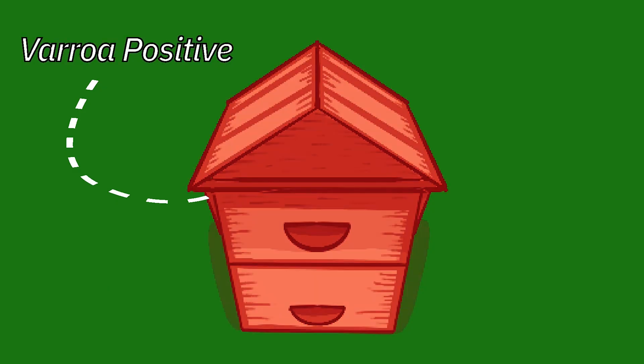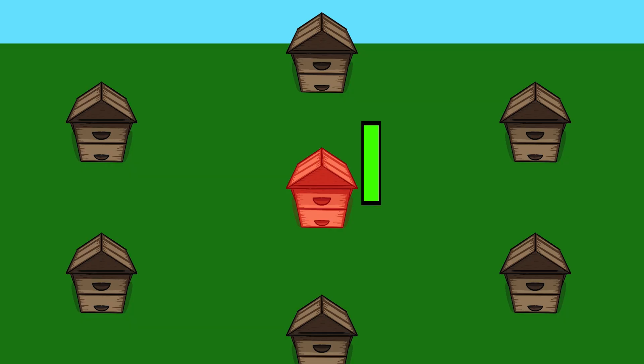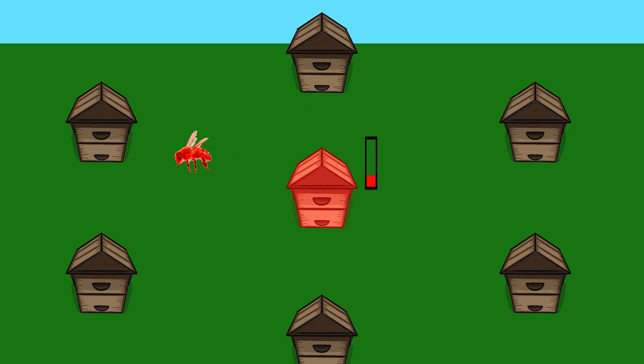Varroa destructor, once it moves into an area, quickly becomes the problem that honey bee colonies face. Varroa is really bad and its life cycle is key to that. But before speaking about its life cycle, I want to talk about how it spreads once it moves into an area. Imagine you have a colony that is varroa-positive in your apiary, and your other colonies don't have it. Varroa can spread from that one colony to neighboring colonies because as varroa weakens it, neighboring colonies may come to rob it. When they come to rob the resources, the varroa get on workers from those neighboring colonies and hitchhike back to those colonies.